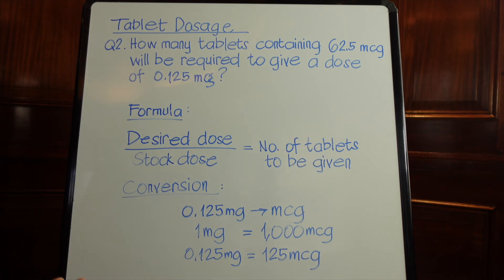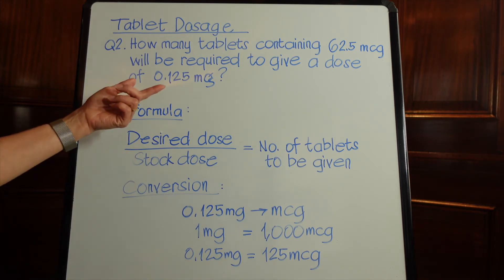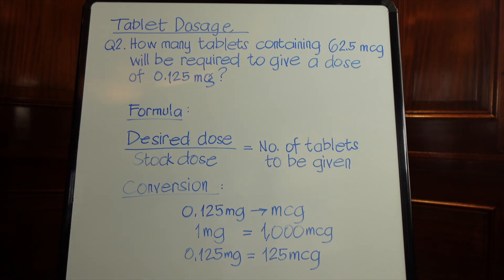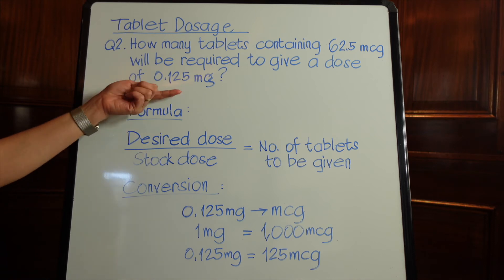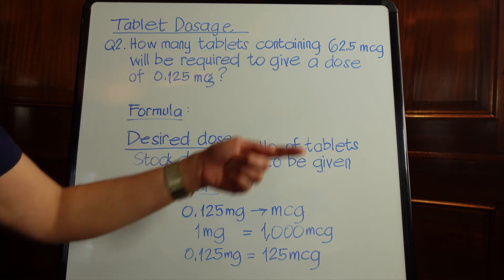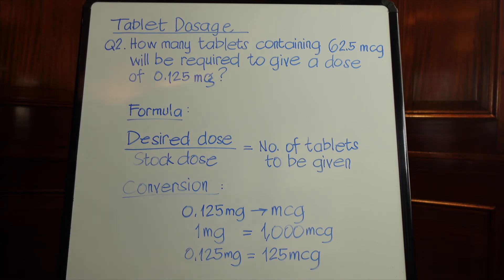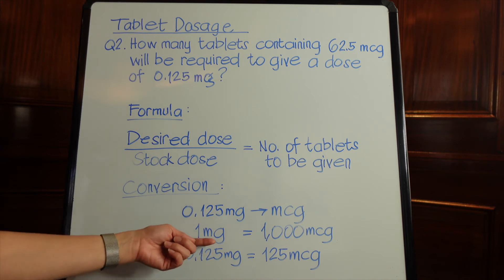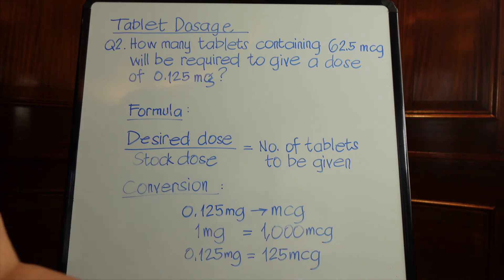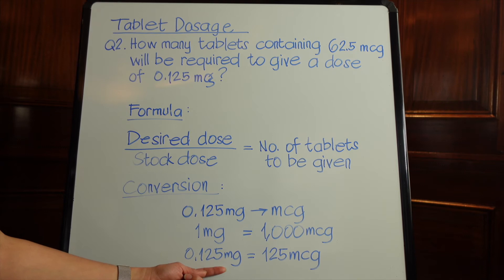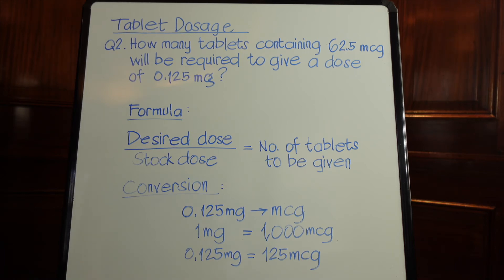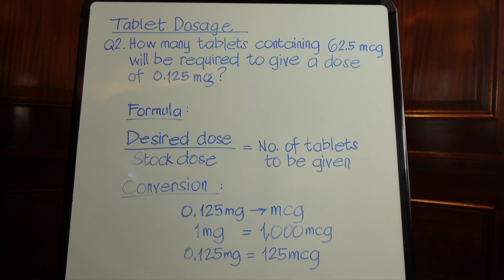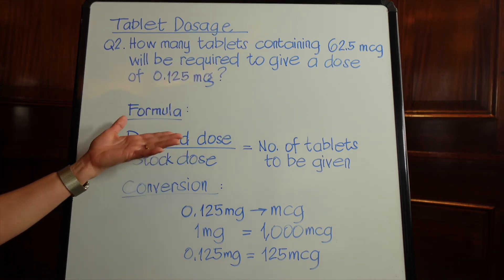Moving to step two — convert if needed. It's quite obvious with this question that we do need to convert. We need to convert 0.125 milligrams into micrograms. Knowing our conversion table: one milligram equals 1000 micrograms. When converting from a bigger unit to a smaller unit you multiply, so 0.125 multiplied by 1000 gives us 125 micrograms.